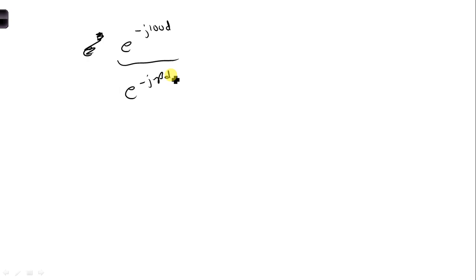Now remember, this is also written in the phasor domain. So if we want to convert to the time domain, we would be multiplying this by E to the J omega T.